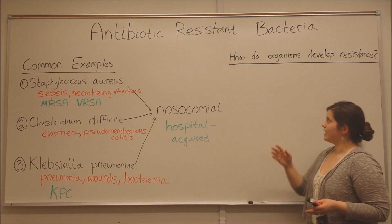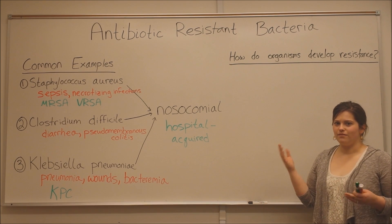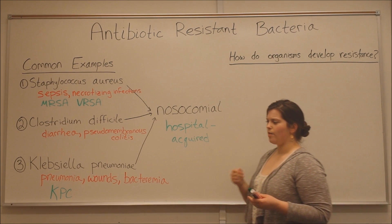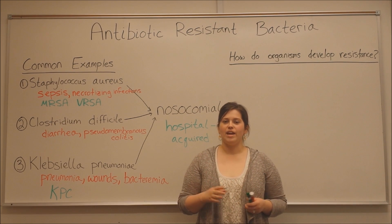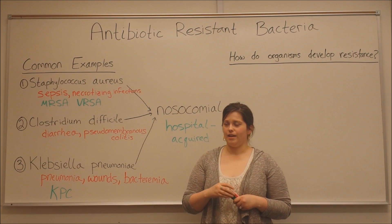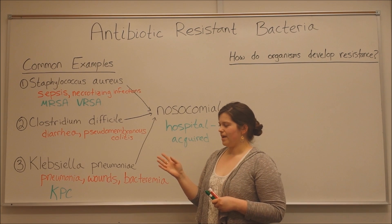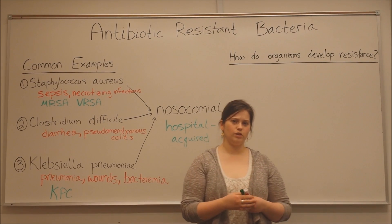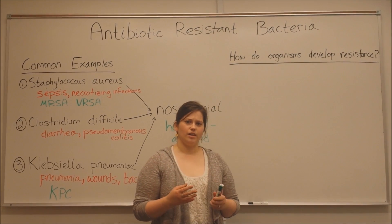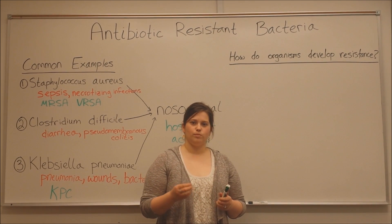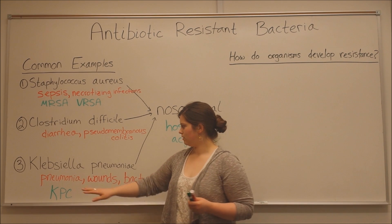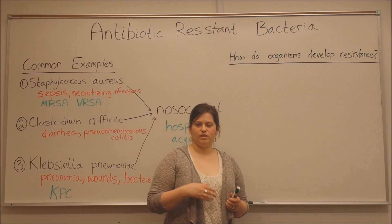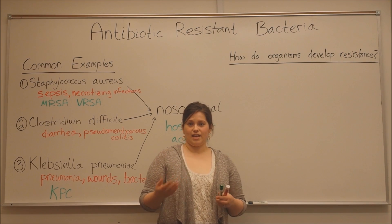You might be asking yourself, how do these organisms develop resistance? Well, there are four main ways we're going to talk about today. The first one is that some bacteria are able to produce enzymes — like KPC with the carbapenemase — that are able to degrade a given drug.